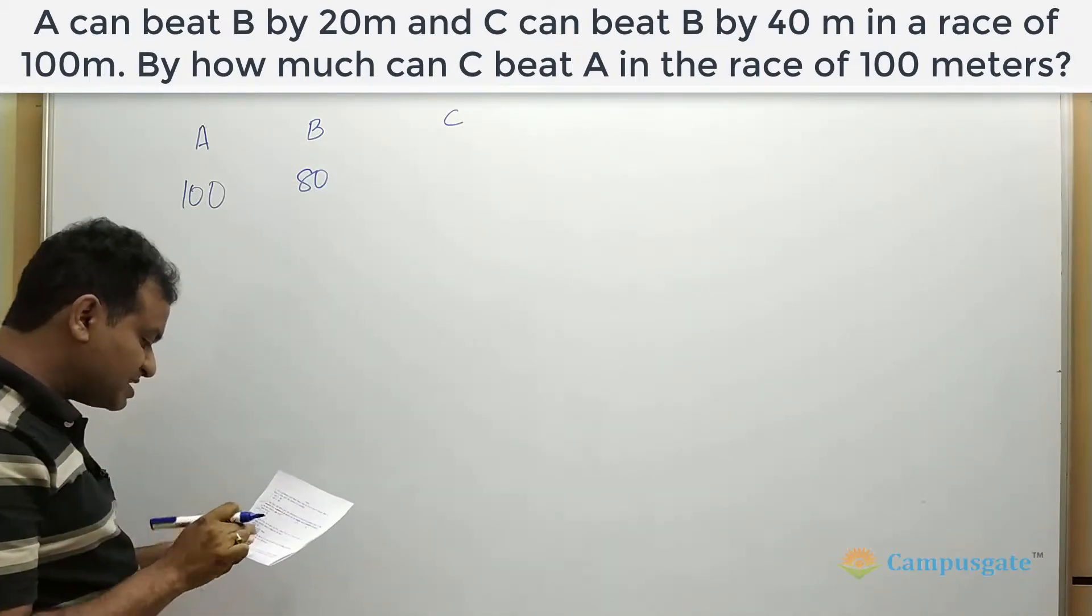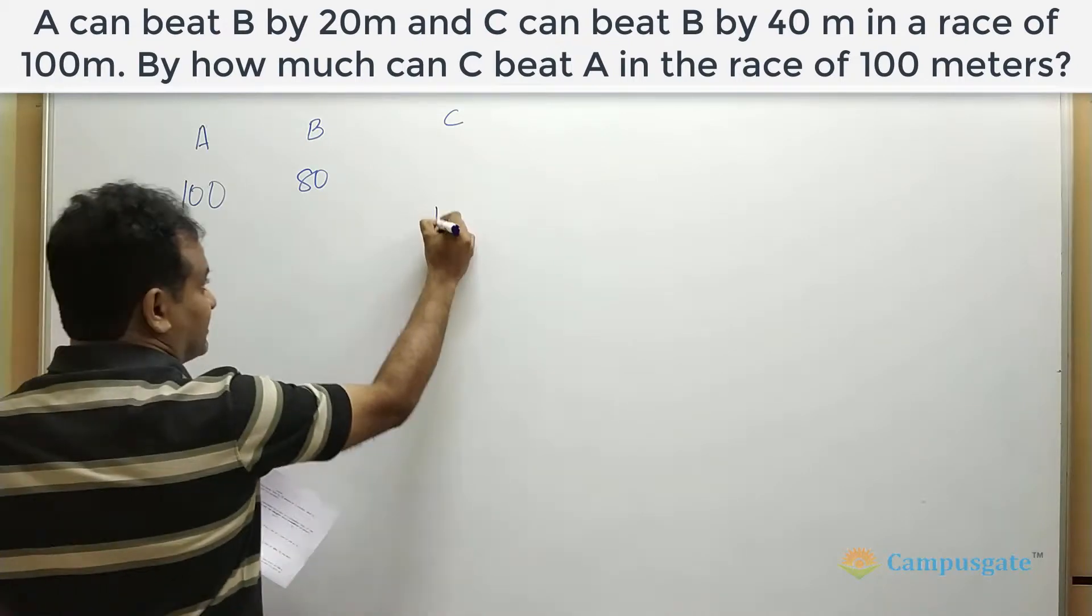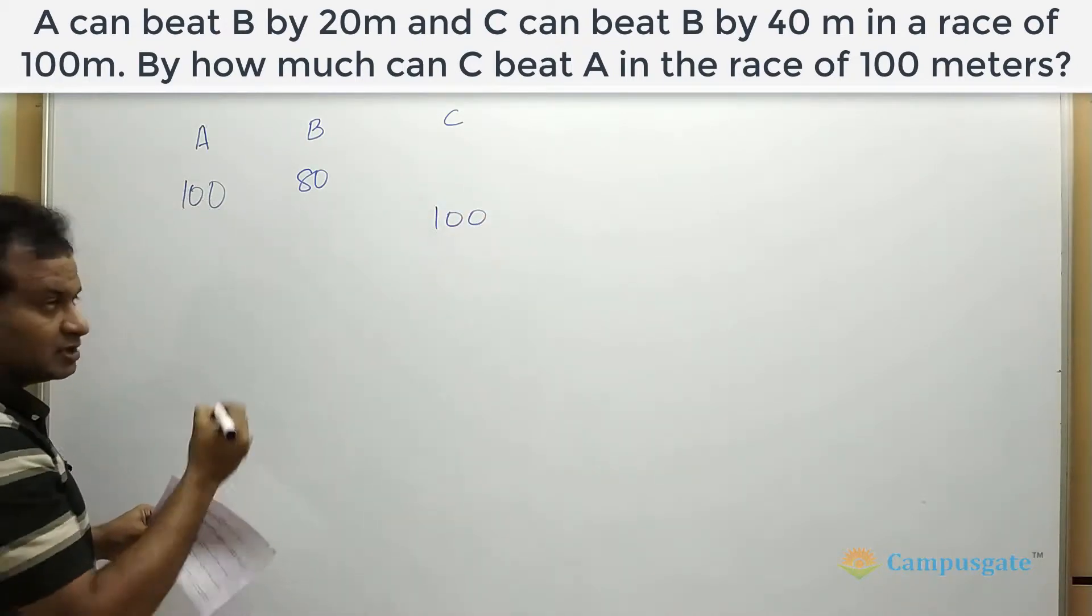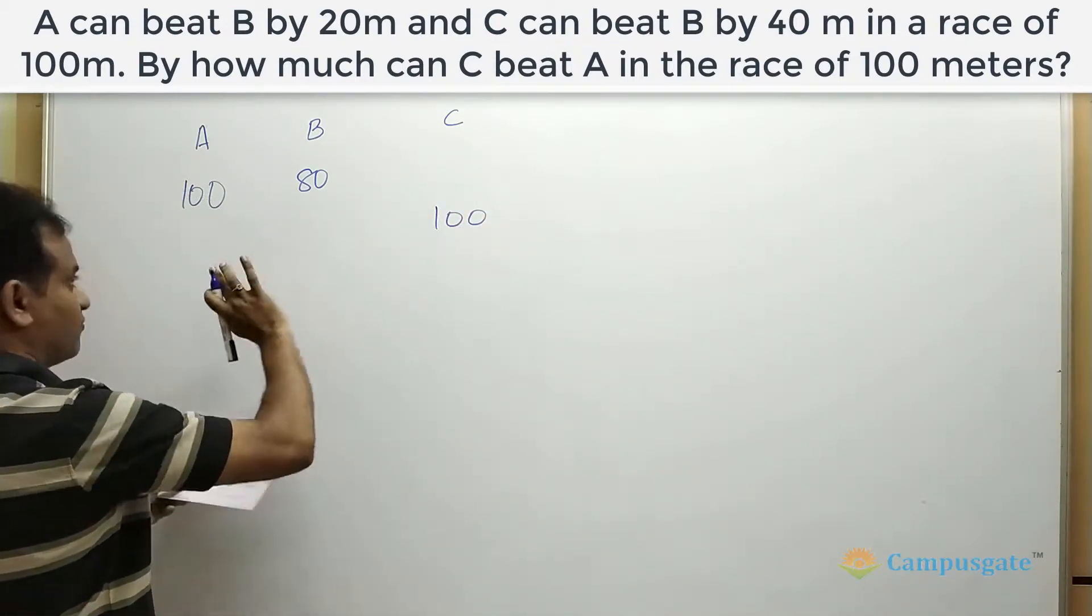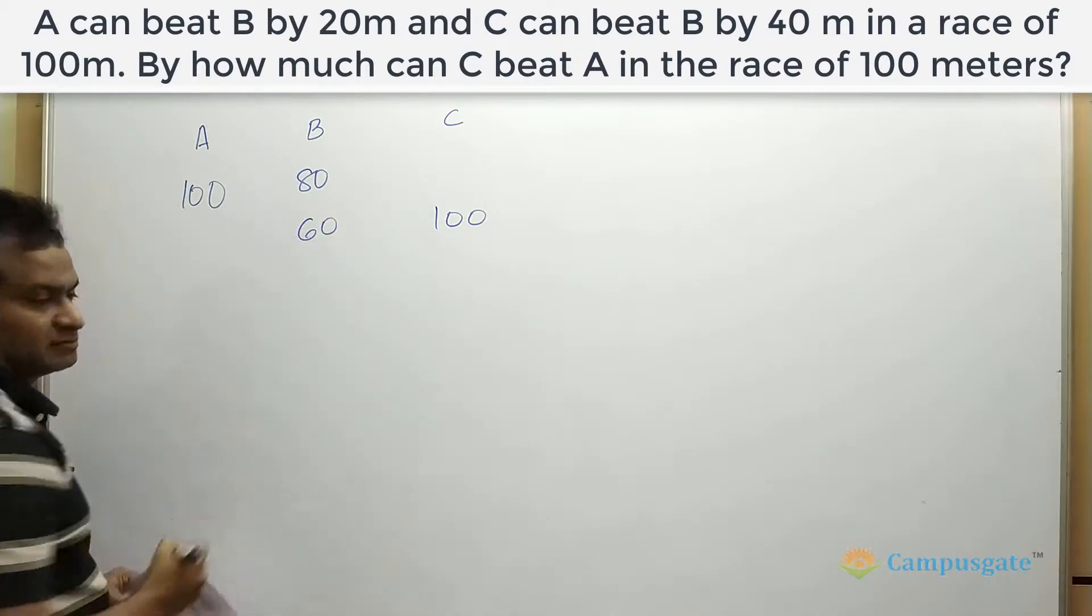But also given that C can beat B by 40. So by the time C covers 100, B covers 40 meters less. That means 60, right?